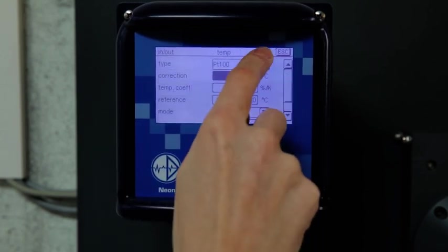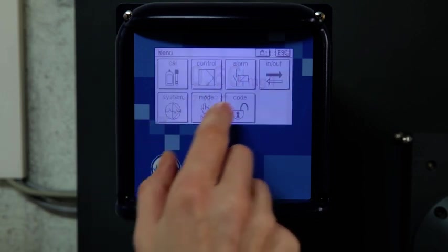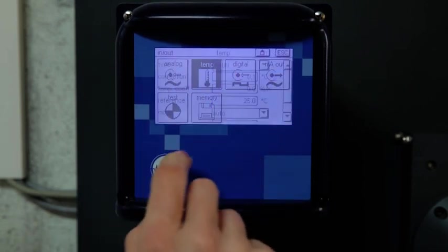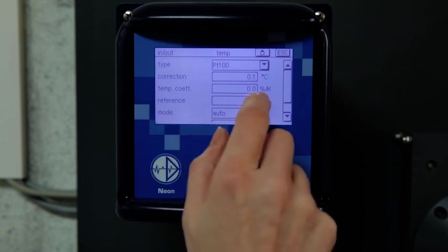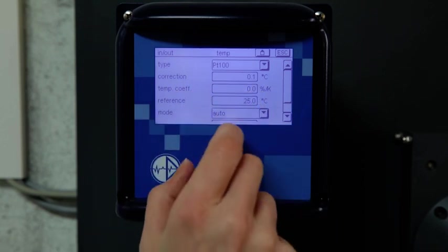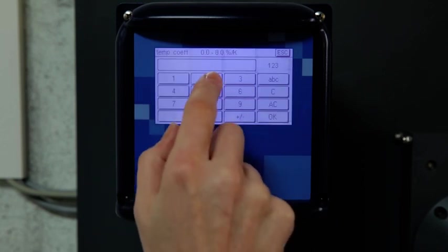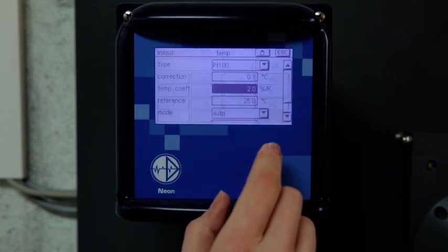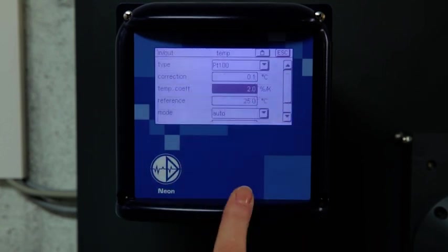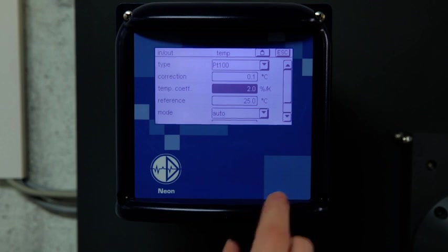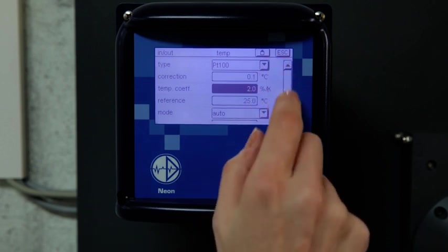If you want to use temperature also for compensation, you can set a temperature coefficient in percent per degree Kelvin in the temperature menu. A coefficient of two percent per degree Kelvin has proven useful for many applications. You can also set the reference temperature for compensation.